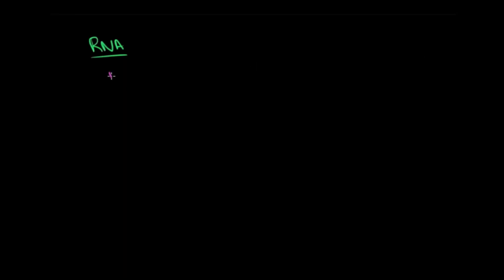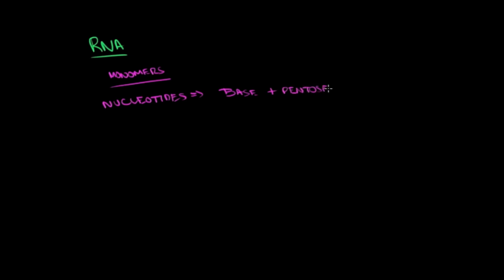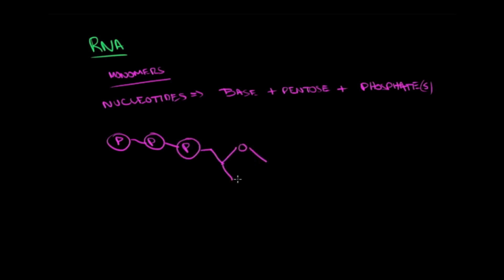The monomers that comprise this polymer are called nucleotides. I've talked about nucleotides in previous tutorials, but I'll review quickly: a nucleotide is a base with a pentose and a phosphate. A nucleotide can have up to three phosphate groups, then a pentose in the middle, and the base on the other side bound to carbon number one.